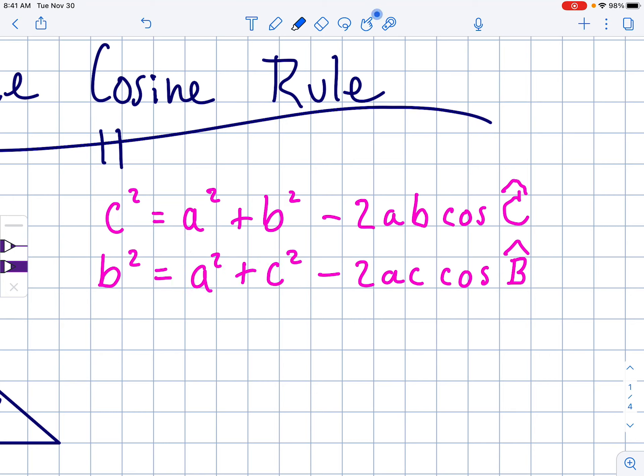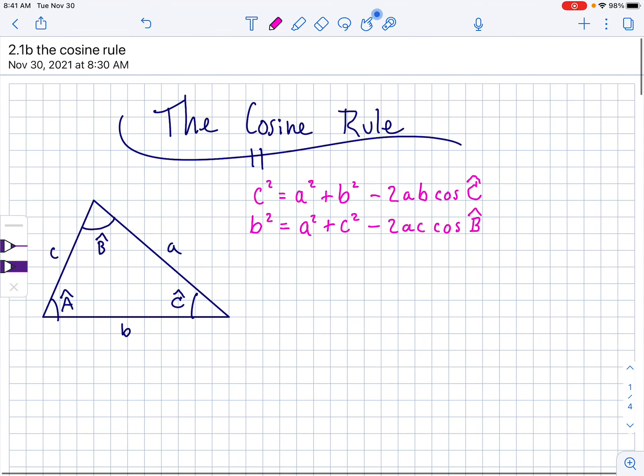So there's actually a third version of this, which is A squared equals B squared plus C squared, the other two letters, and then minus 2 times those two letters, and then cosine of the capital letter that we started with. So it's really just one equation, one structure with the letters rearranged in different ways, depending on what you're given.